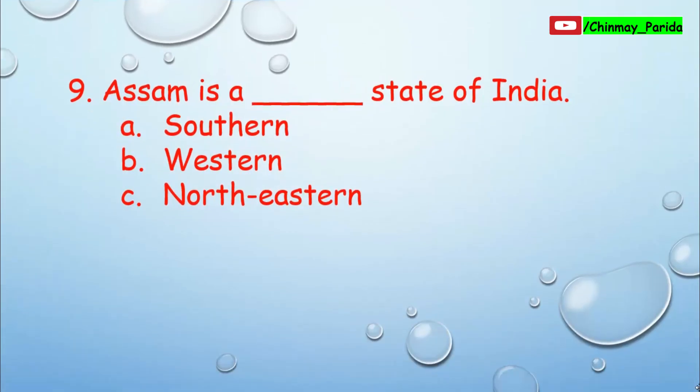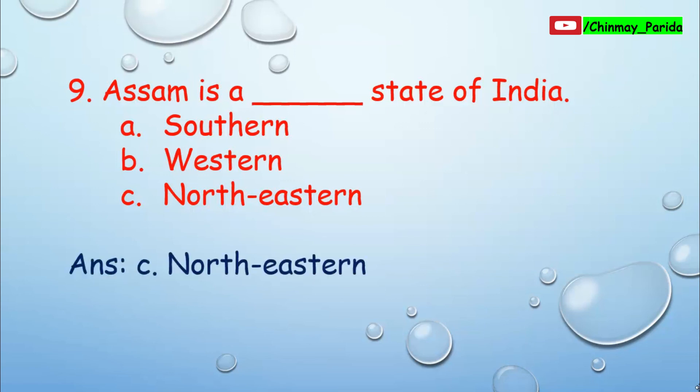Question number 9. Assam is which state of India? Option A: southern, option B: western, option C: northeastern. Assam is a northeastern state of India — it is situated in the northeastern portion of India. Option C is the correct answer, northeastern.